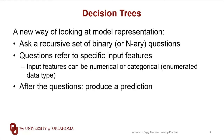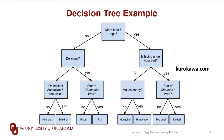Let's look at an example. The inspiration is the game of 20 questions, where someone thinks of an object and the player gets to ask up to 20 questions to try to figure out what that person is thinking of. Here's the decision tree. There's typically a root node at the top, and below the root node is a question. Our first question here asks whether or not the thing has more than five legs, and the answer is a binary answer — either yes or no, with no other answers.